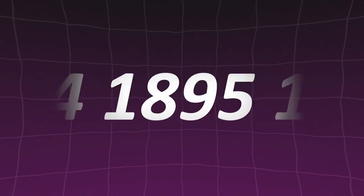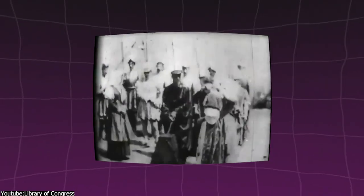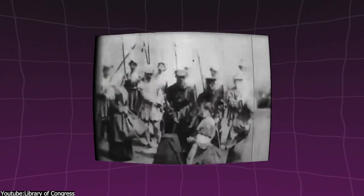In 1895, Alfred Clark created what is commonly accepted as the first ever motion picture special effect, while filming a recreation of the execution of Mary, Queen of Scots. Clark instructed the actor to stand on the block while dressed in Mary's costume, and as the executioner swung the axe, Clark stopped the camera, told everyone to freeze, had the actor leave the scene, swapped him with a dummy designed to look like Mary, and resumed filming to let the executioner carry out the axe swing.